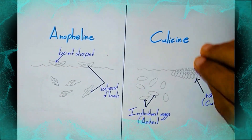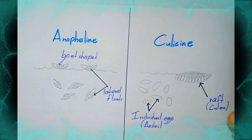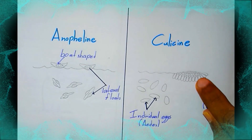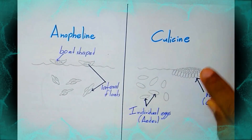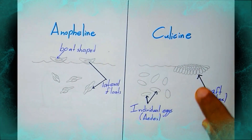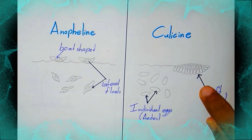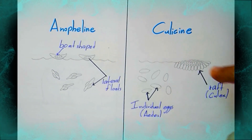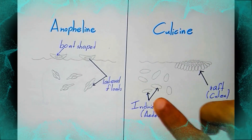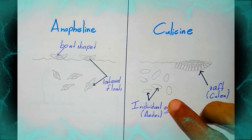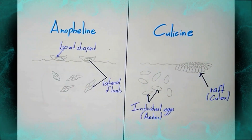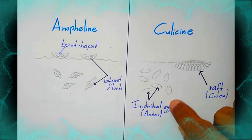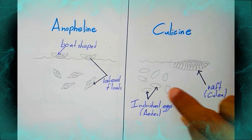In culicine mosquitoes, Culex species lay eggs in masses arranged vertically with the pointed end toward the water surface — this is referred to as an egg raft, and it looks like a raft. Aedes species lay single eggs; the eggs are cylindrical and reticulated, as you can see.